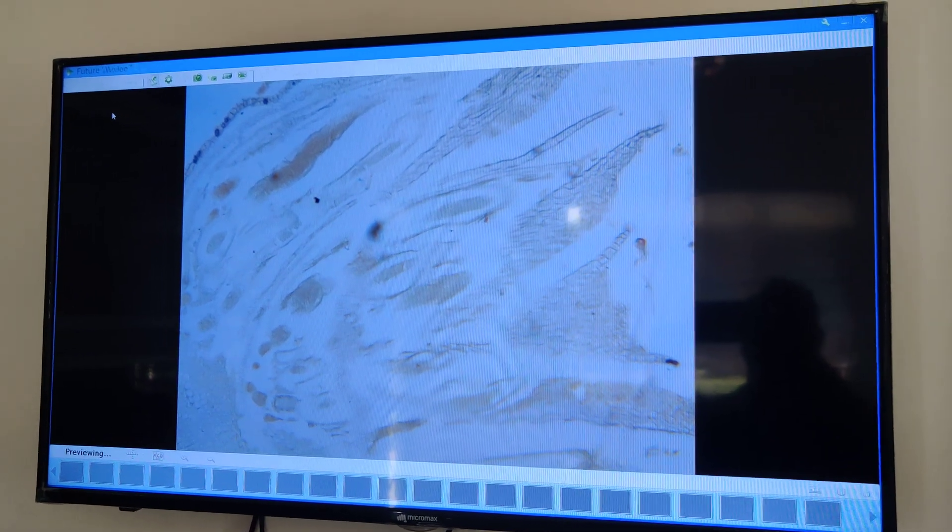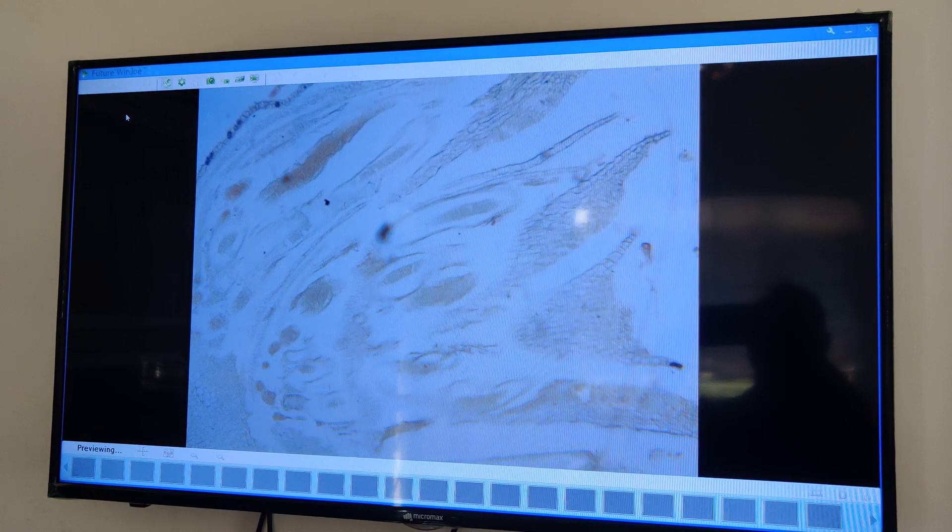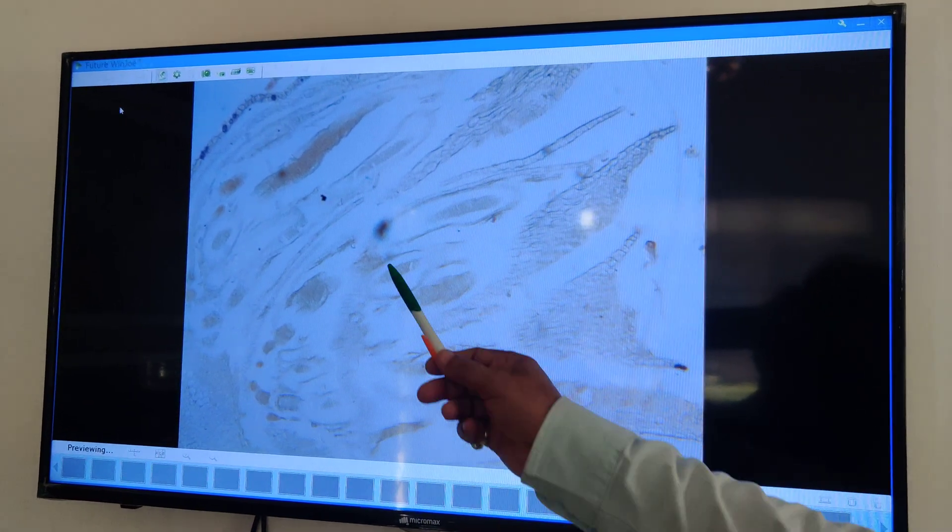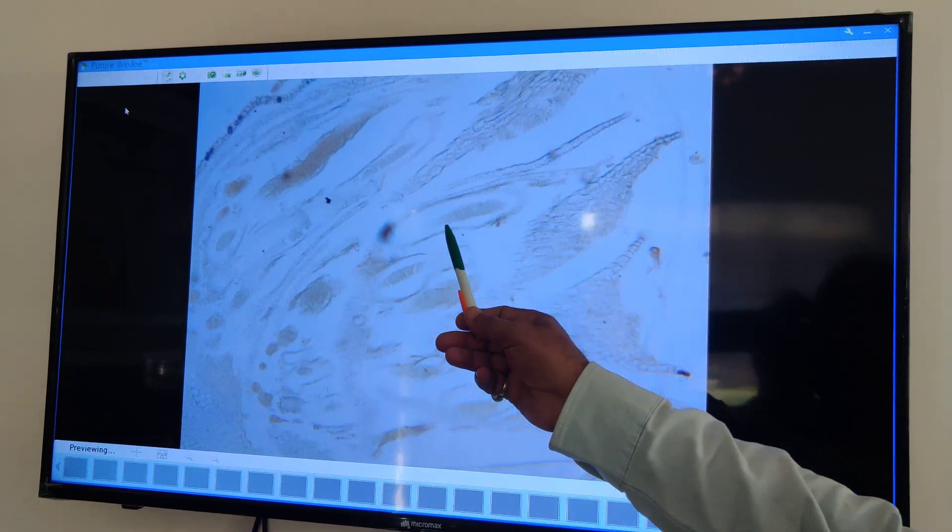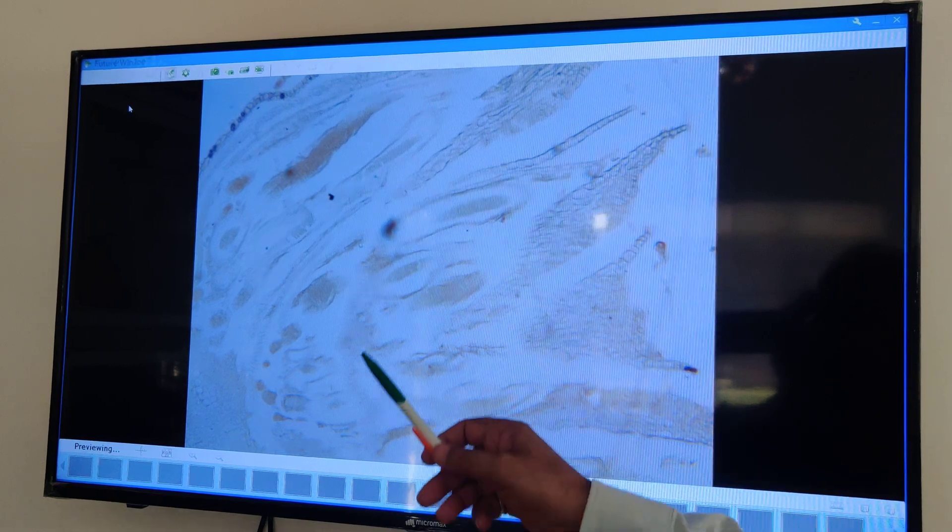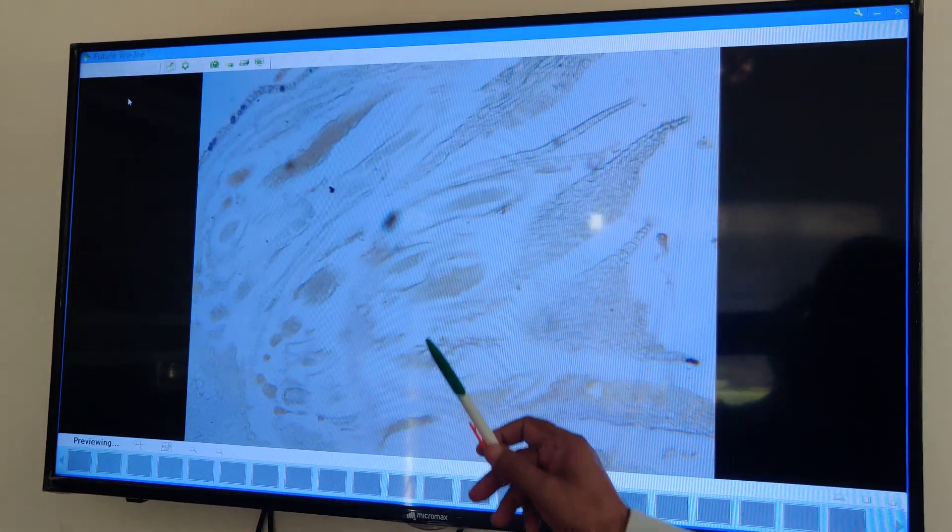So, this is a permanent slide of male branch showing Antheridia. Here, you can see these round structures are Antheridia, which are filled with a large number of male gametes, Antherozoids.